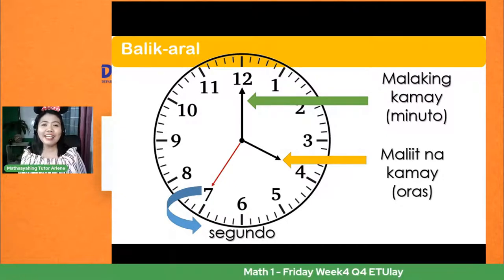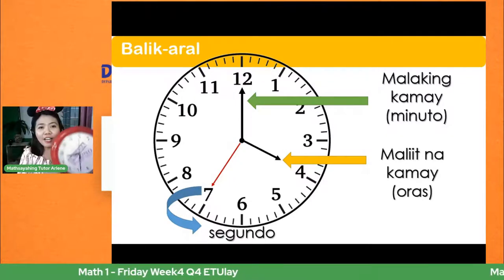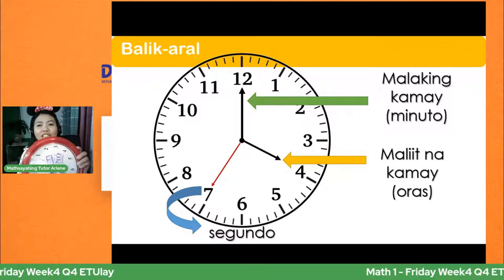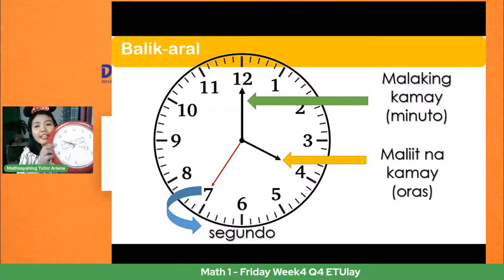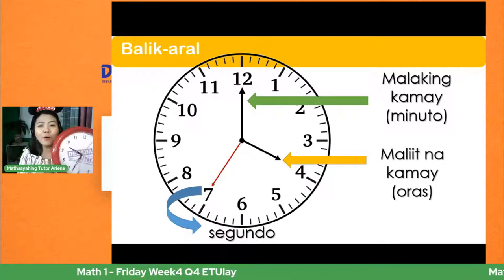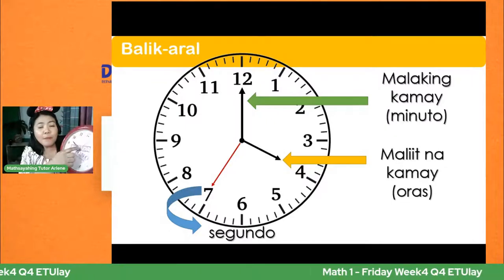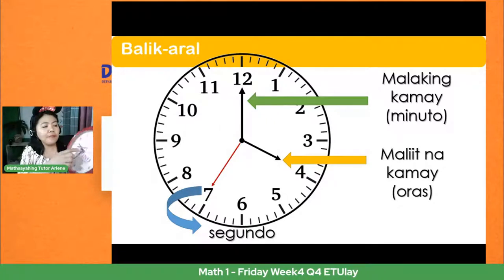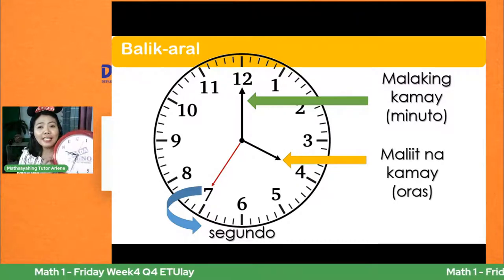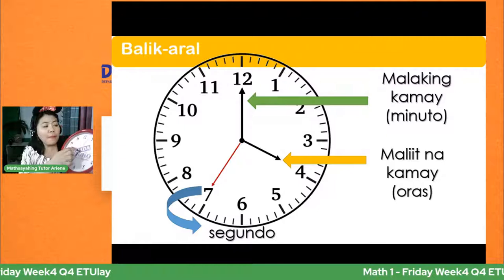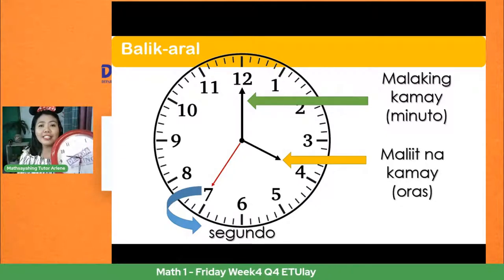Pagbalik-aralan natin ang bahagi ng orasan. Ito ang tinatawag nating analog clock. Pag sabi nating analog, hindi siya digital — mano-mano natin makikita na umiikot ang kanyang mga kamay. Meron tatlong kamay ito: merong maikling kamay, may mahaba, at may manipis pa. Yung mahabang kamay, yun ang ating minuto. At yung maikling kamay, yun ang ating oras. At yung manipis na kamay na makikita nyo sa analog clock, yun ang tinatawag nating segundo.